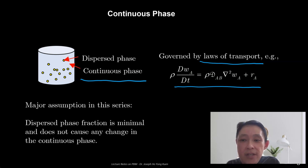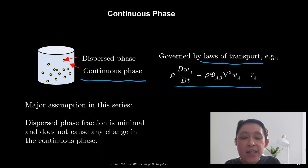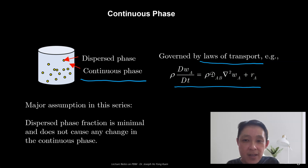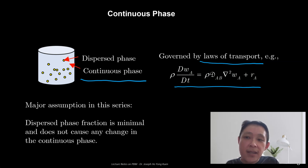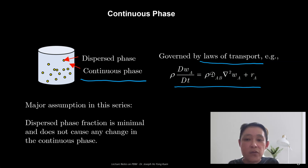However, in this video series we are not going to be too concerned about what happens in the continuous phase. We will make an assumption that the dispersed phase fraction is minimal in the cases we study, and so it does not cause any change in the continuous phase. For example, if the particles do not dissolve and cause a viscosity change in the continuous phase, then we do not need to be concerned about phenomena at the continuous phase. This is going to be the major assumption when we talk about population balance modeling in this video series.